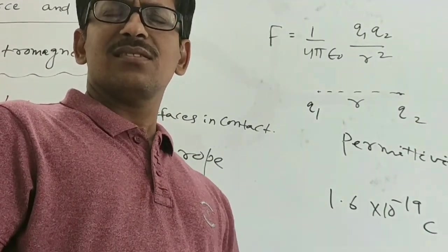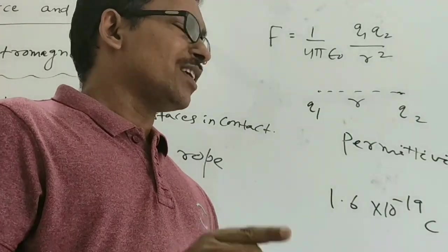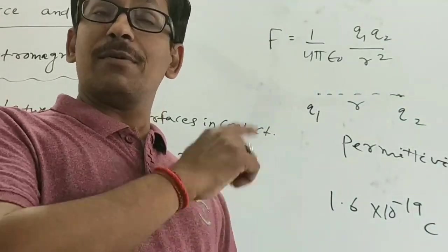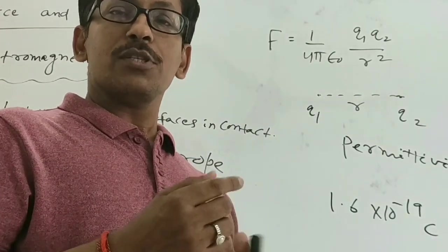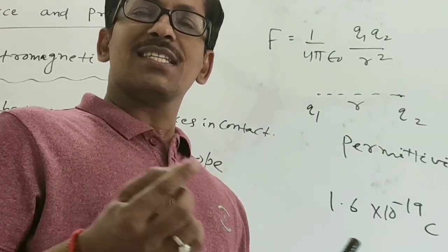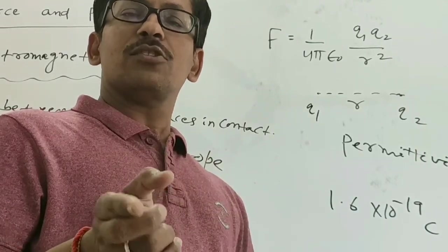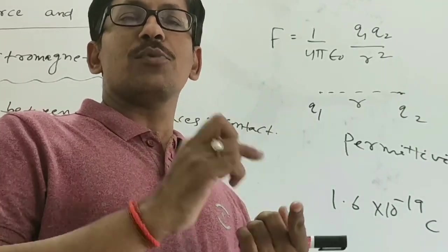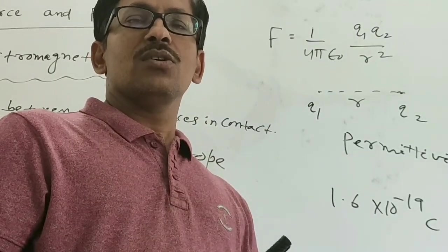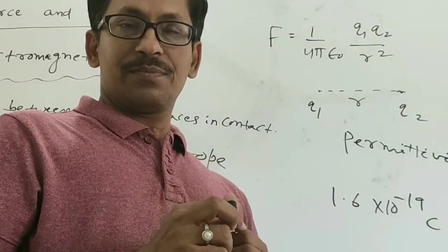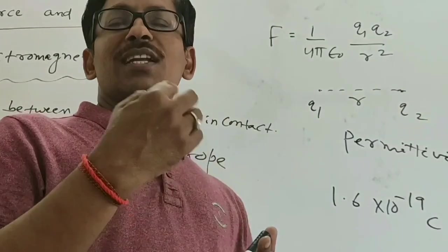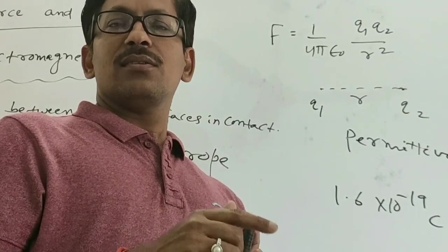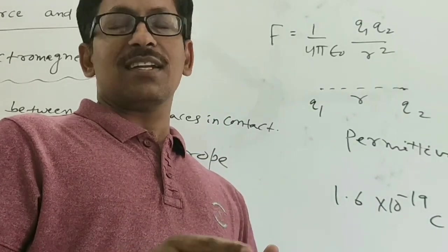One more point: the electromagnetic force may be attractive or repulsive, but gravitational force is always attractive. Charges are of two types: positive and negative. If you take two like charges — say two positive charges — they will repel each other. If you take one positive and one negative charge, they will attract each other. So the electromagnetic force can be either repulsive or attractive.